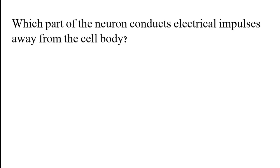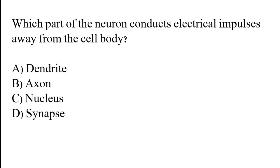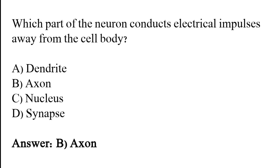Which part of the neuron conducts electrical impulses away from the cell body? Options: Dendrite, Axon, Nucleus, Synapse. The correct answer is option B. The axon is the part of the neuron which conducts electrical impulses away from the cell body.